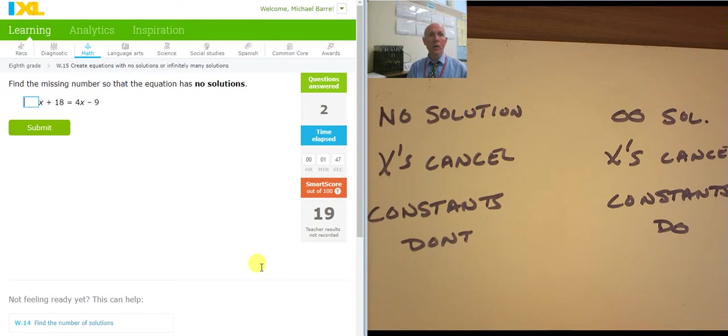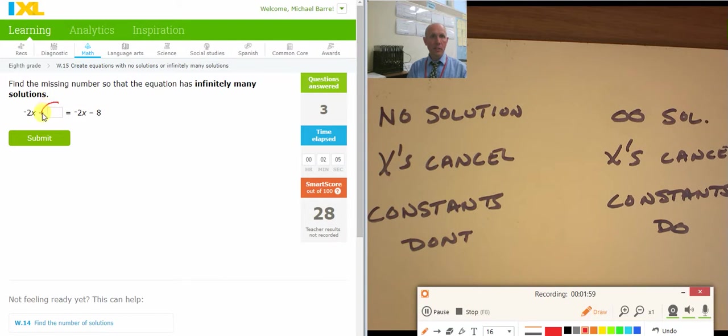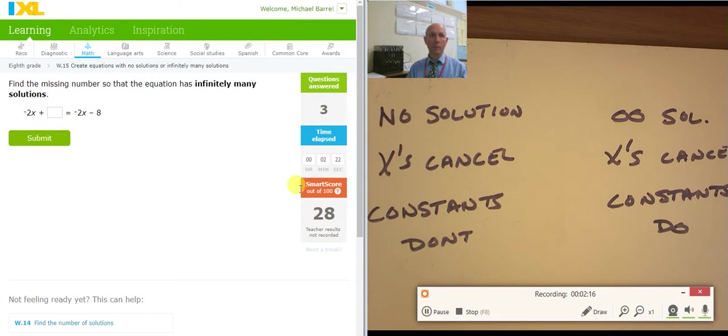I need no solution. So I need 4x and 4x. They'll cancel out. 18 will not cancel with negative 9. Infinite solutions. So negative 2x cancels with negative 2x. But right here, infinite solutions, these two numbers have to cancel out. So something has to cancel with negative 8, which is another negative 8 right there. So negative 8.